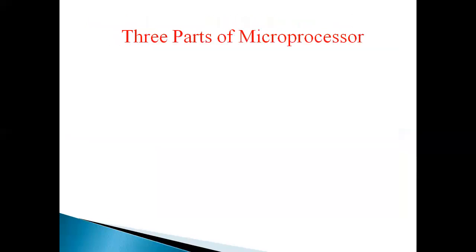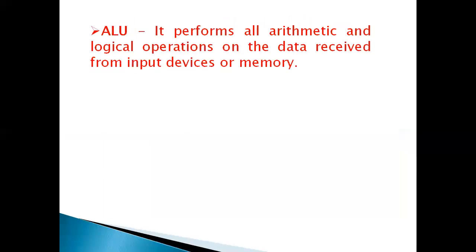Purpose of microprocessor: ALU, registers and control unit. What is ALU? It performs all arithmetic and logical operations on the data received from input devices or memory. Arithmetic operations such as addition and subtraction and logic operations such as AND and OR, exclusive OR. Finally, the results are stored either in registers or in memory.